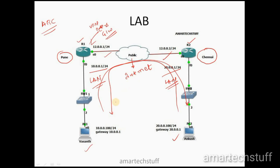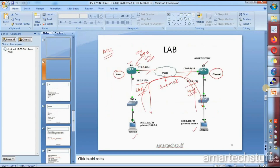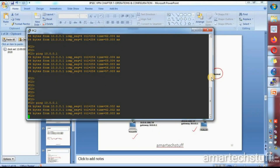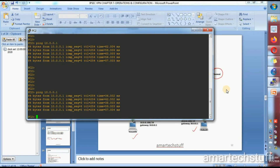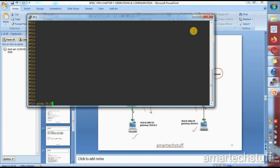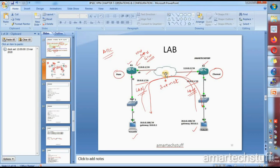Let's first check whether the PCs can ping each other. PC1 is Vasanth's PC and PC2 is Ankush's PC. From Ankush's PC I'm able to ping Vasanth's PC in Pune, and from Vasanth's PC we verify connectivity to Ankush's IP 20.0.0.100. We have connectivity between both offices, but this ping traffic going from Pune to Chennai is going unprotected over the public network. Now we have to pass this traffic through a tunnel, so let's start the configuration steps.